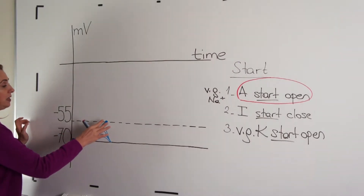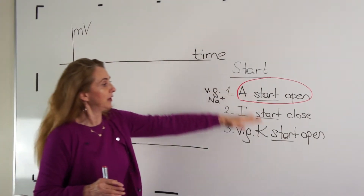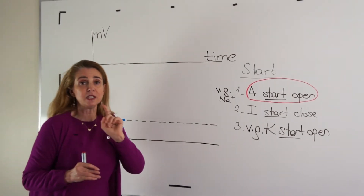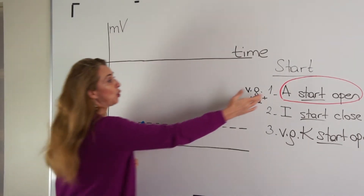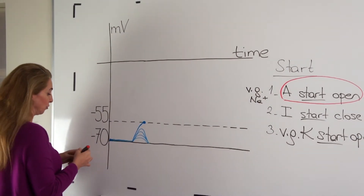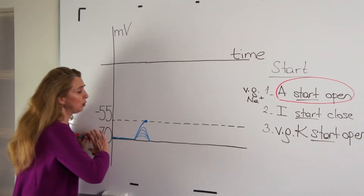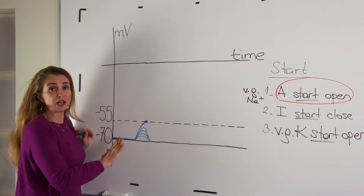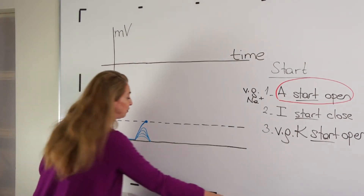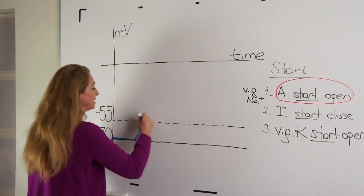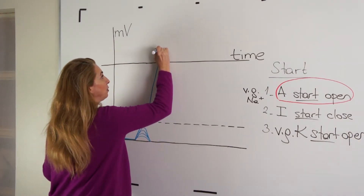At the threshold, three events start to happen, but only one of them is completed around the threshold: the opening of the voltage-gated sodium channel. At this point, through all of the open voltage-gated sodium channels, sodium will rush into the cell, and entry of sodium into the cell produces further and further depolarization.